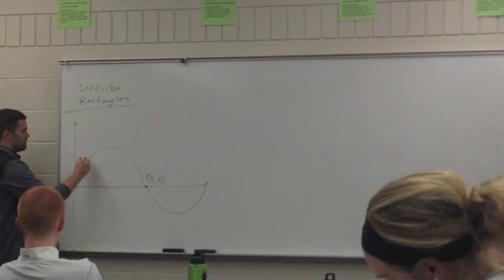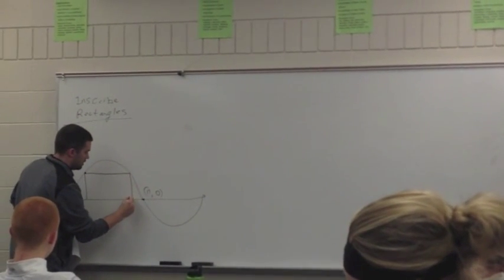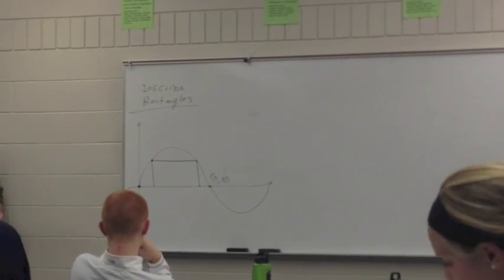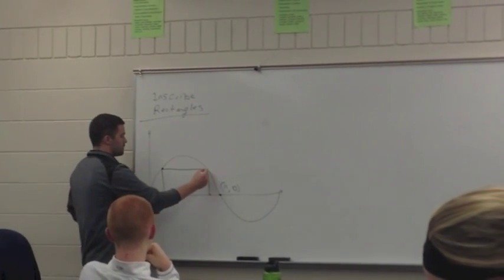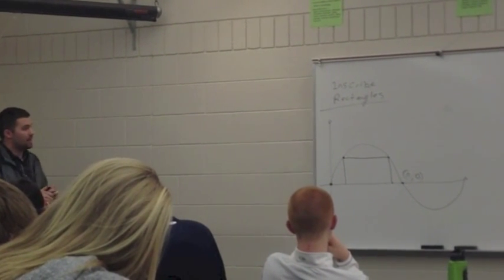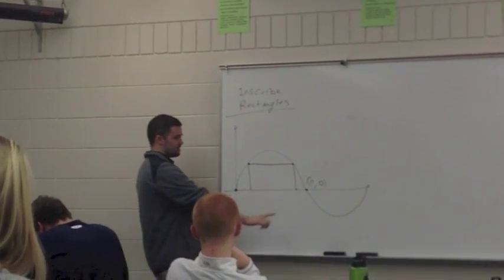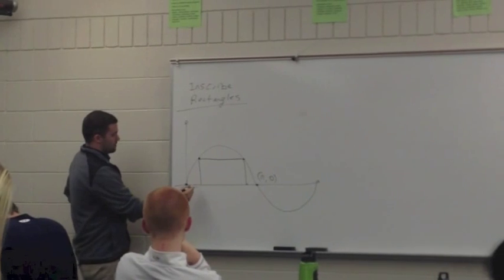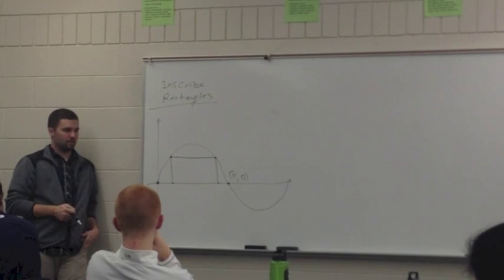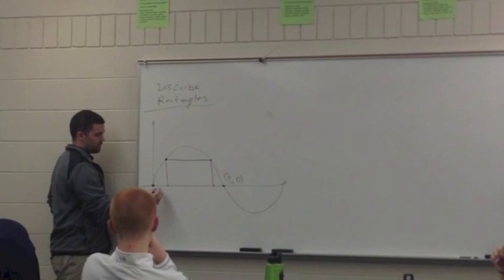And I want to inscribe a rectangle underneath this, one arch of the sine curve, like so. Now hopefully I kind of understand the problem now, and I'm going to start kind of labeling things in the diagram. So I know that this distance is pi. What is this point right here, this arbitrary point?